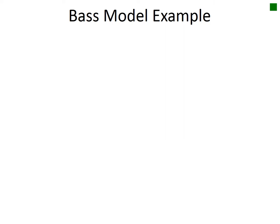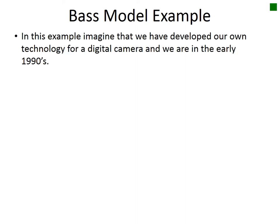In this Bass model example, what we want to do is examine a particular product and try to predict sales for that product in the future. So this would be a forecast of particular sales. And what we're going to do is imagine that we have developed the technology for our company for a digital camera. So this is going to be in the early 1990s, or perhaps late 1980s.